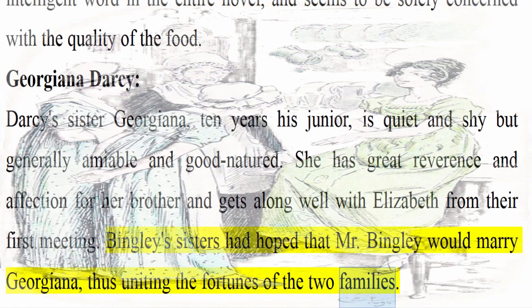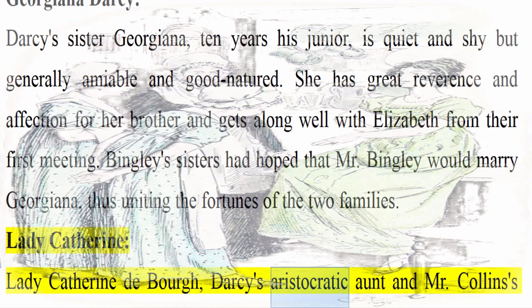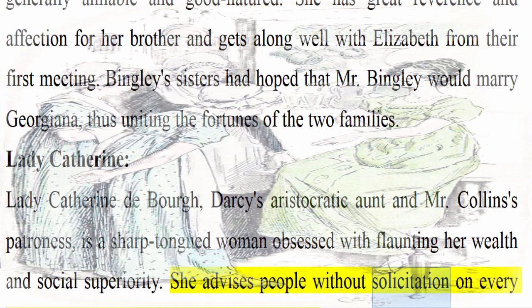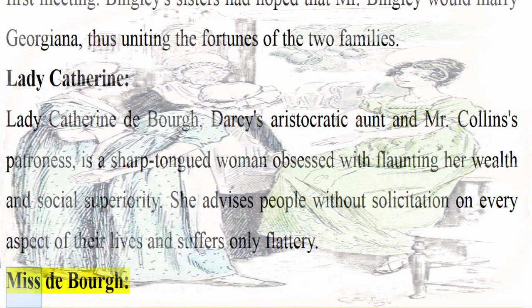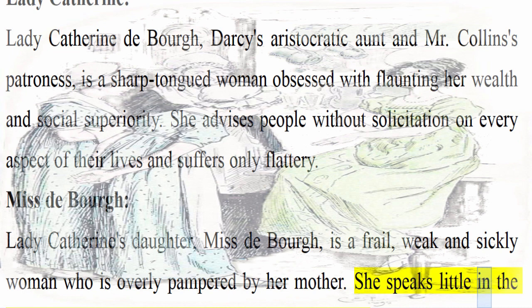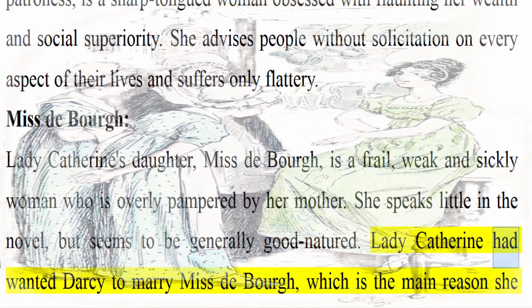Lady Catherine: Lady Catherine de Bourgh, Darcy's aristocratic aunt and Mr. Collins's patroness, is a sharp-tongued woman obsessed with flaunting her wealth and social superiority. She advises people without solicitation on every aspect of their lives and suffers only flattery. Miss de Bourgh: Lady Catherine's daughter, Miss de Bourgh, is a frail, weak, and sickly woman who is overly pampered by her mother. She speaks little in the novel but seems to be generally good-natured. Lady Catherine had wanted Darcy to marry Miss de Bourgh, which is the main reason she disapproves of Darcy's union with Elizabeth.